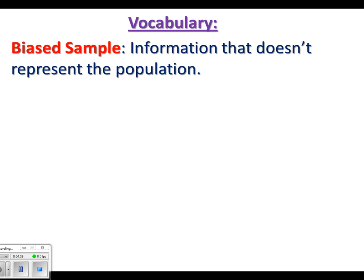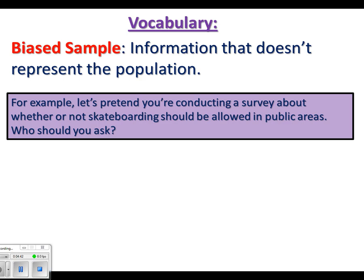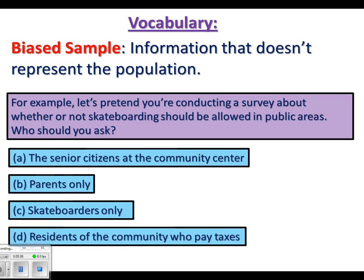Here's a situation where you might want to look at whether you're being biased or unbiased. Let's pretend you're conducting a survey about whether skateboarding should be allowed in public areas. Who should you ask? Your choices are A, B, C, or D. Option A is senior citizens at the community center. I have a feeling — no offense — they probably would not be in favor of skateboarding in public spaces, so that's probably not the best group to ask.